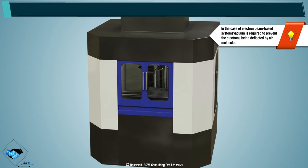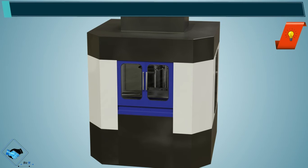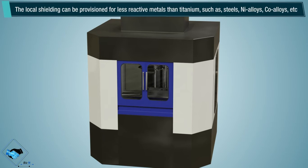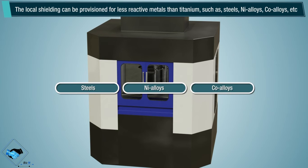In the case of electron beam-based systems, vacuum is required to prevent electrons being deflected by air molecules. Laser-based systems require a fully inert chamber while working with reactive metals. Local shielding can be provisioned for less reactive metals than titanium, such as steels, alloys, etc.